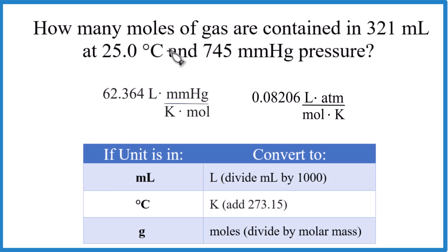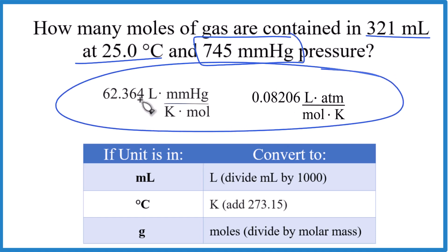So pause and give this one a try. And there's lots going on. You've got milliliters and temperature in Celsius, you've got to change that. And then you've got a pressure, mmHg. So make sure you choose the right value of R. I gave you two of them. Give it a try.